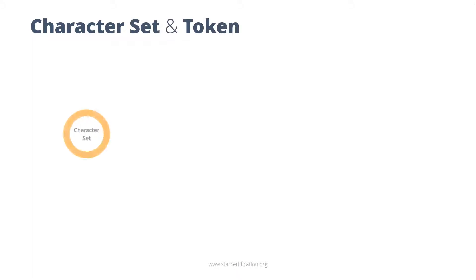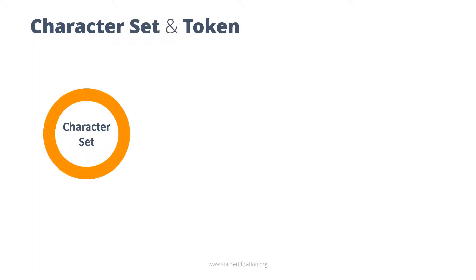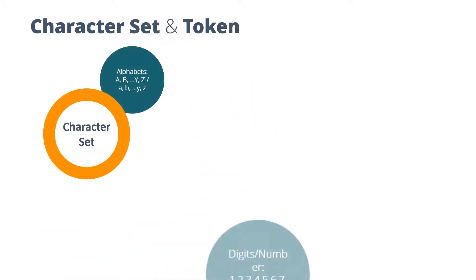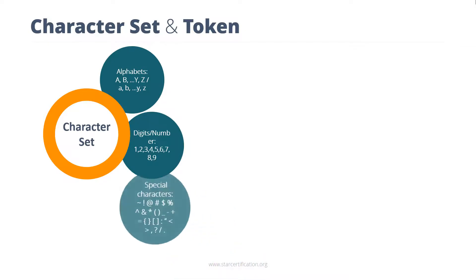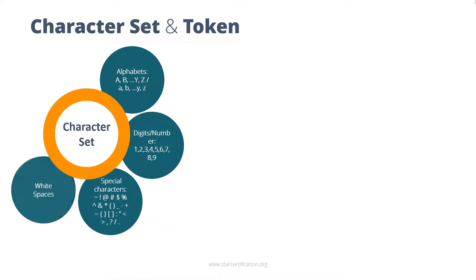A character set is a set of alphabets, numbers, special characters and spaces that are used to represent information. The character set for C language is shown on the screen.